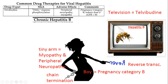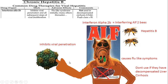Next we have telbivudine. 'Telv' kind of reminds me of television, and it's hepatitis B being shown on the TV. Adverse effects include peripheral neuropathy — drawn with really skinny arms — and myopathy with muscle wasting, also represented by the skinny arms. She's watching TV and transcribing something in reverse for reverse transcriptase. She's also pregnant with a boy, making this pregnancy category B, and there's chain termination as well.